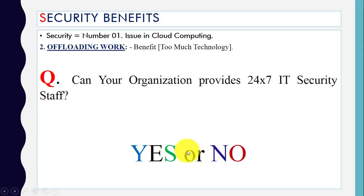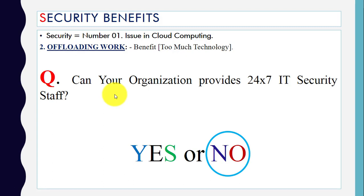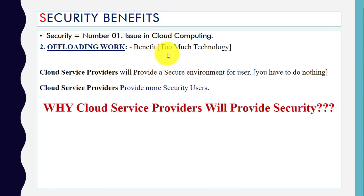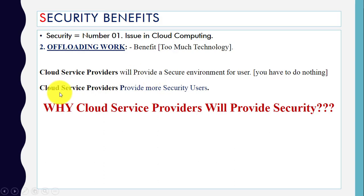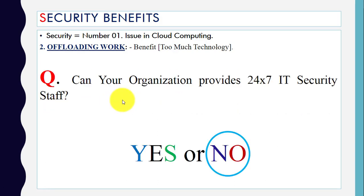Now, offloading work. First question: can your organization provide 24/7 IT security staff? Obviously no, because that's too expensive. The solution is that cloud service providers will provide a secure environment for the end users — you have to do nothing. Everything is managed by the cloud service provider, and your data, important information, and everything related to you is their responsibility. They provide more security to end users.